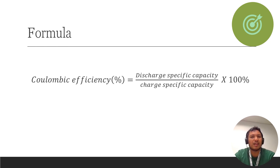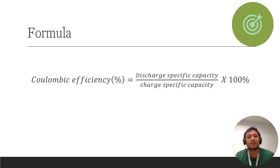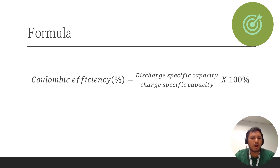Here is the formula for coulombic efficiency. For battery-grade material, coulombic efficiency is discharge specific capacity divided by charging specific capacity, times 100. For normal supercapacitors, it is discharge specific capacitance divided by charging specific capacitance, times 100. For a three-electrode system with lithium-ion batteries, the formula is reversed — charging divided by discharging — because the lithium metal always acts as the anode in a three-electrode setup.